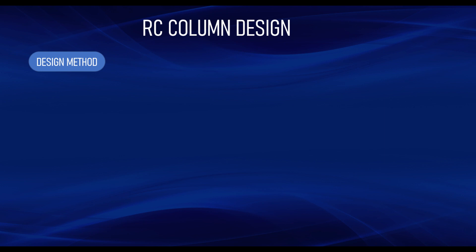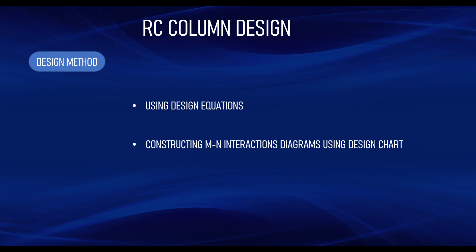There are three methods of designing a reinforced concrete column according to the European code. The first method is using the design equations, which are derived from analysis of the stress block diagram — the same approach used for beams and slabs. The second method is constructing moment-axial load interaction diagrams, which are the design charts used for columns. These are derived from the design equations but are much easier to use and avoid a lot of computation. Design charts can also be used for beams, though that is not common.